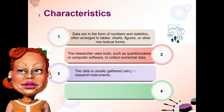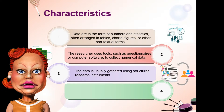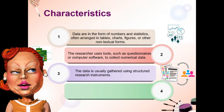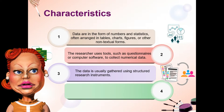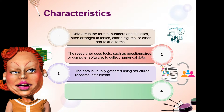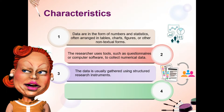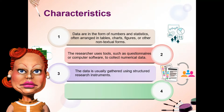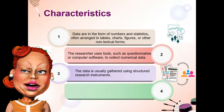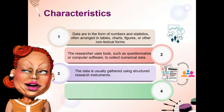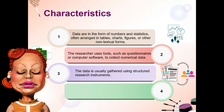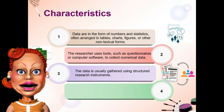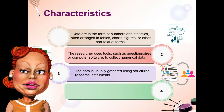Ang pangatlo naman, the data is usually gathered using structured research instruments. Malinaw na dapat ay maayos ang pagkakagawa ng mga research instruments — walang mali, nasa tamang pagkakasunod-sunod. Kasi madalas hindi nakikita ng personal ng researcher ang mga respondents niya. Kaya naman, kung hindi malinaw ang material na gagamitin, baka magkalituhan sila kung papaano yun sasagutan. Hindi katulad ng qualitative research na pwede kang magbago ng question sa material mo, especially kapag hindi mo nakita yung attribute na hinahanap mo. Sa madaling salita, flexible ang qualitative research kesa sa quantitative research.